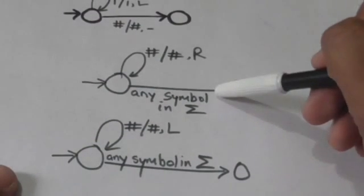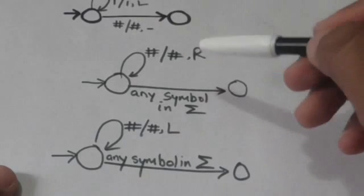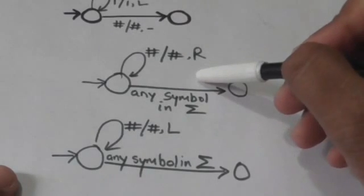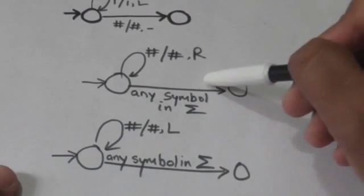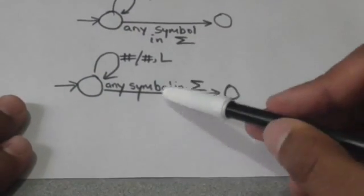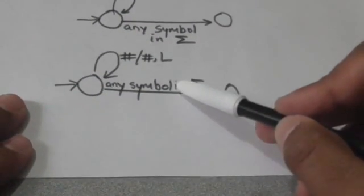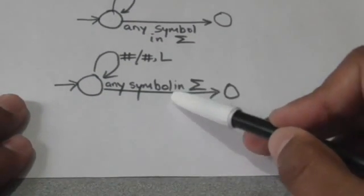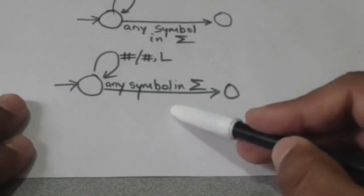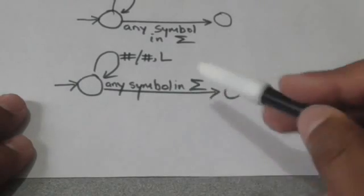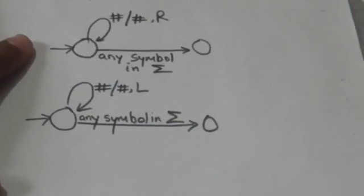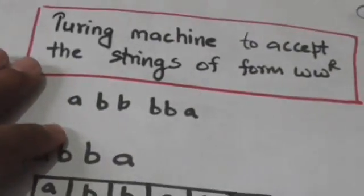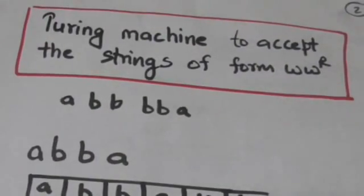This Turing machine finds the first non-blank symbol to the right of the current head position. And this Turing machine finds the first non-blank symbol to the left of the current head position.